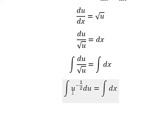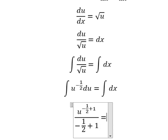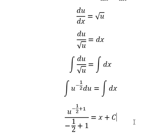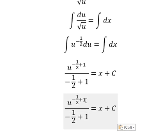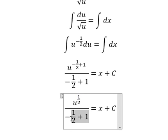The integration of this one, we have u to the power of negative 1/2 plus 1, over negative 1/2 plus 1. For x dx we have x and we add the constant C. This works out to 1/2 and 1/2.